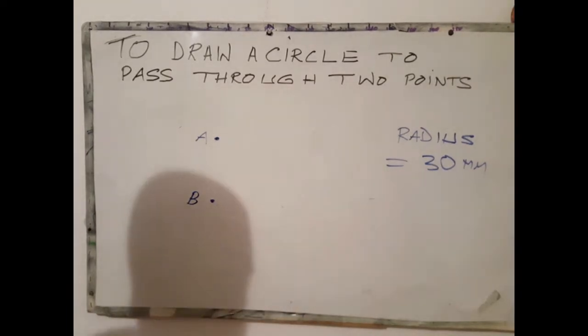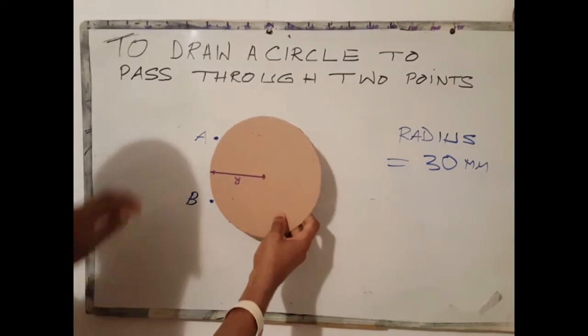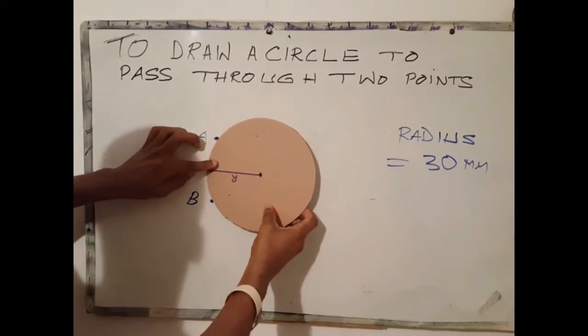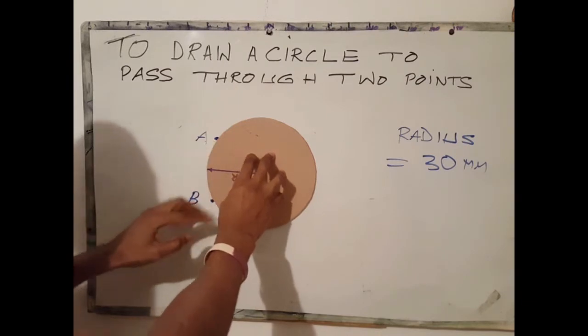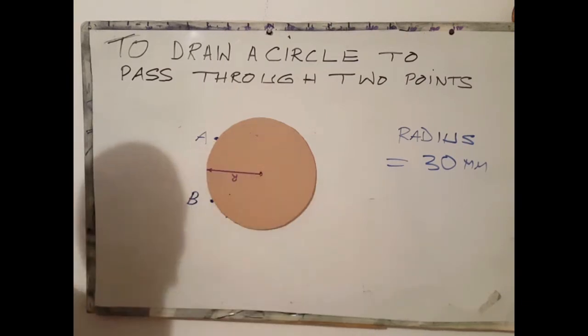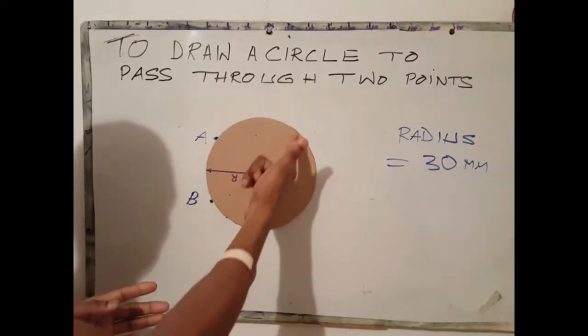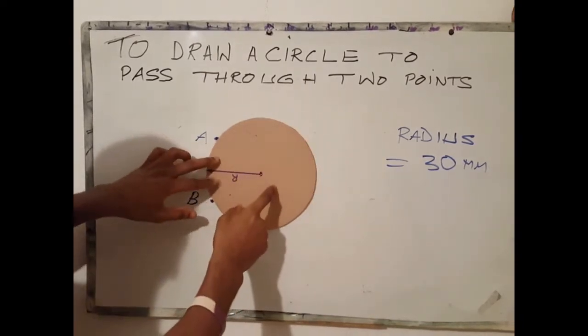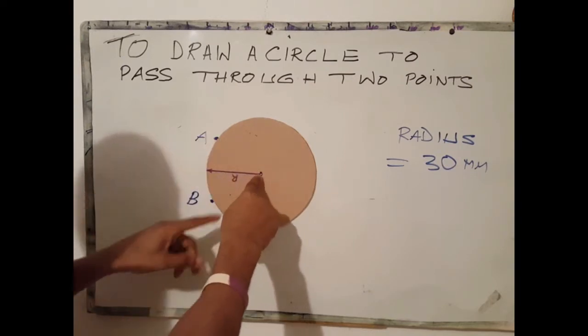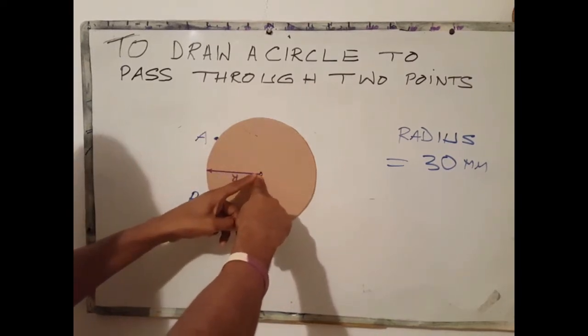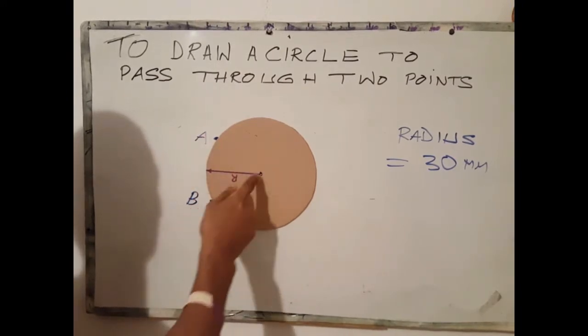A graphical representation of this is a circle of radius R passing or touching point A and point B. The objective here is to find the center for this circle. As you can see, the center from A to B is the same as from B to center. From A to the center is the same as from B to the center.